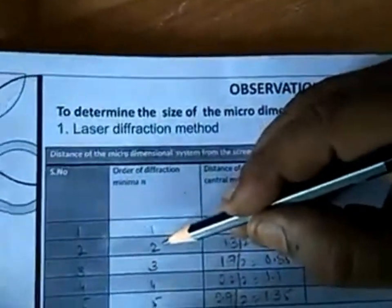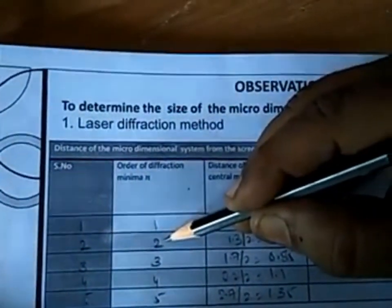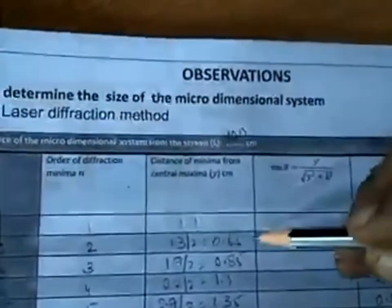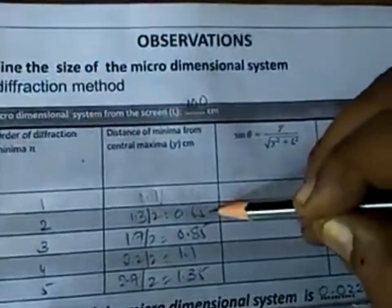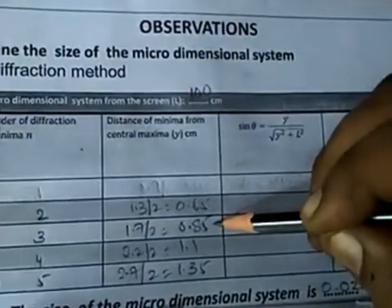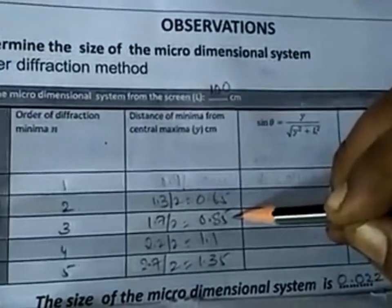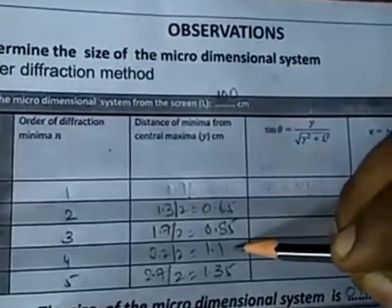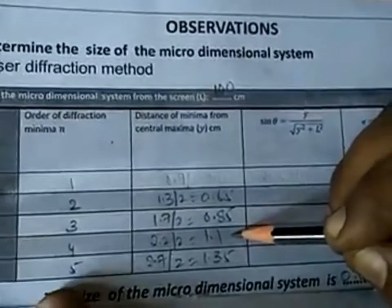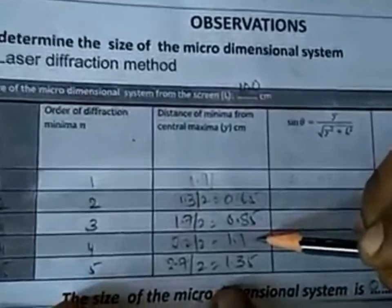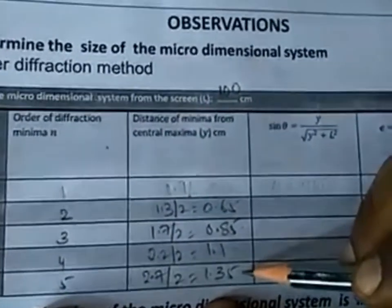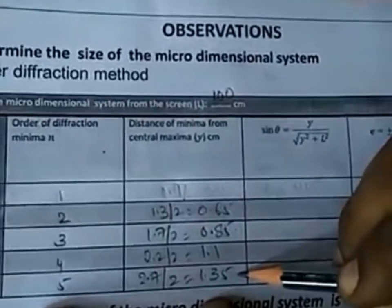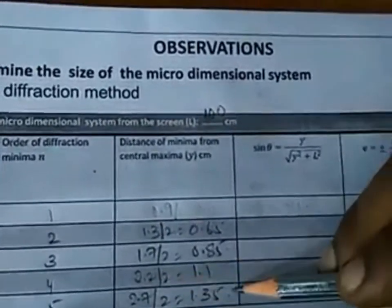These values are tabulated: the second order minima falls at a distance of 0.65 centimeters from the central maximum, the third order minima at 0.85 centimeters, the fourth order minima at 1.1 centimeters, and the fifth order minima at 1.35 centimeters from the central maximum.